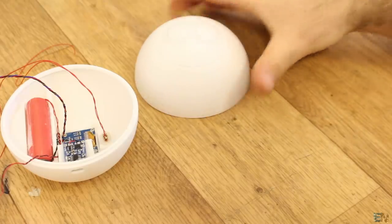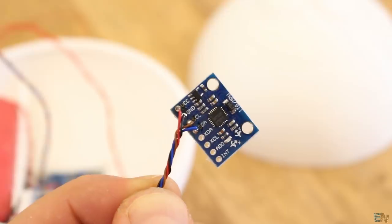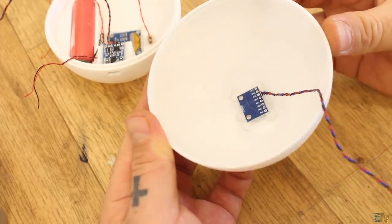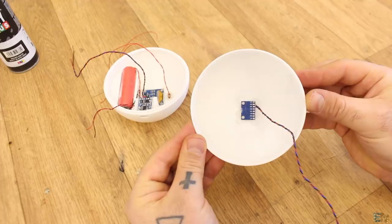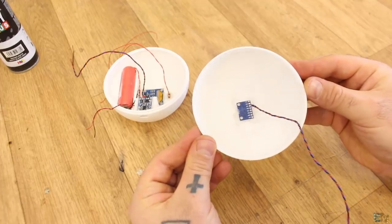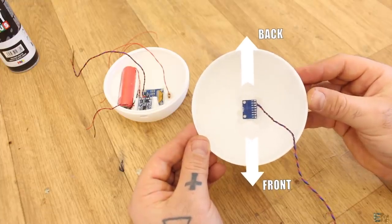Now I take the other side of the ball and the gyro module. Solder wires to the module for power and data. Just in the middle of the top part of the ball, I glue the gyro module. You have to glue it like this, knowing that this will be the front and back part of the ball because I will use only the X axis of the gyro module.